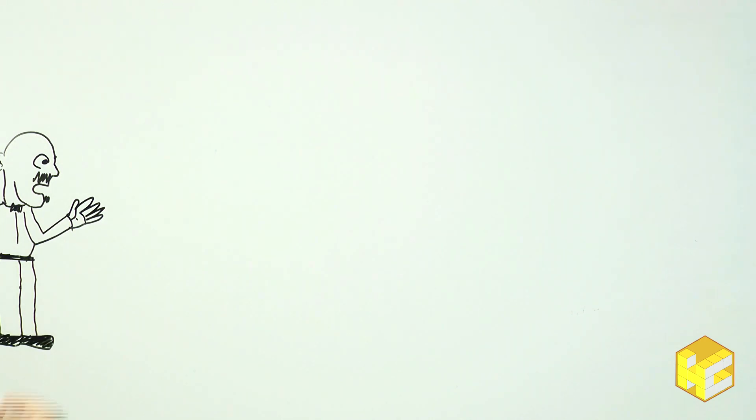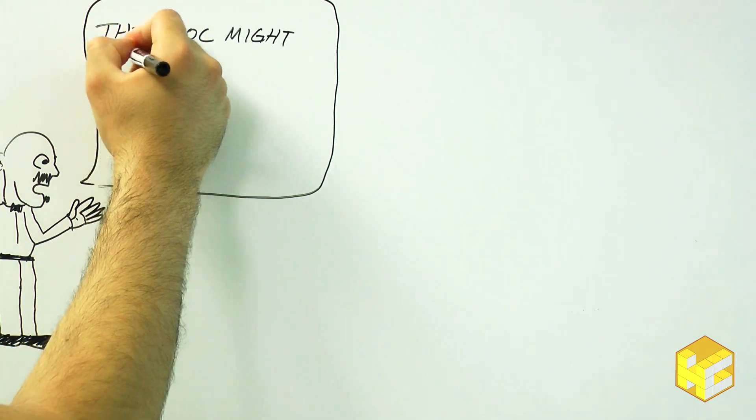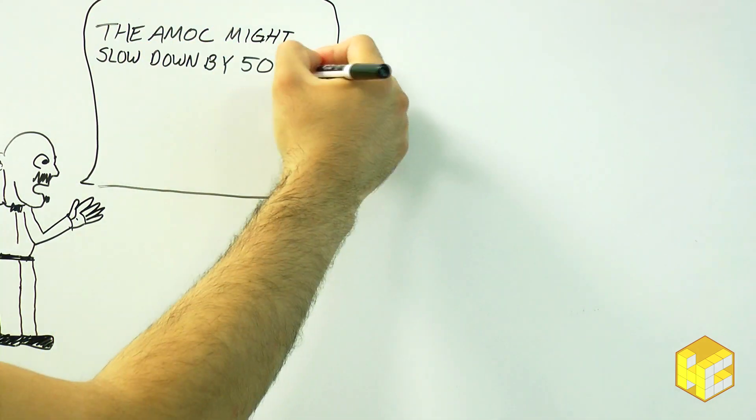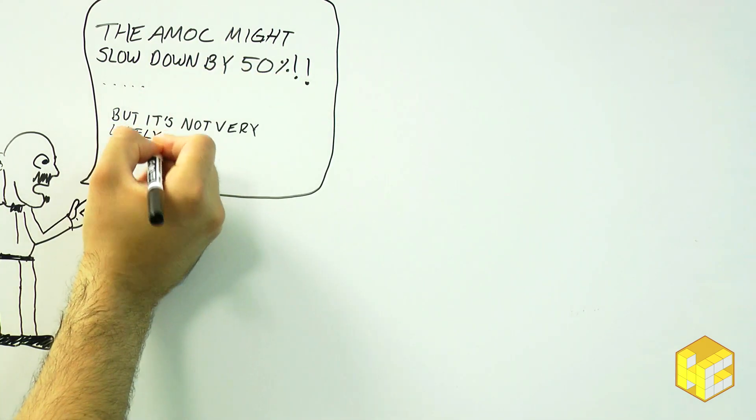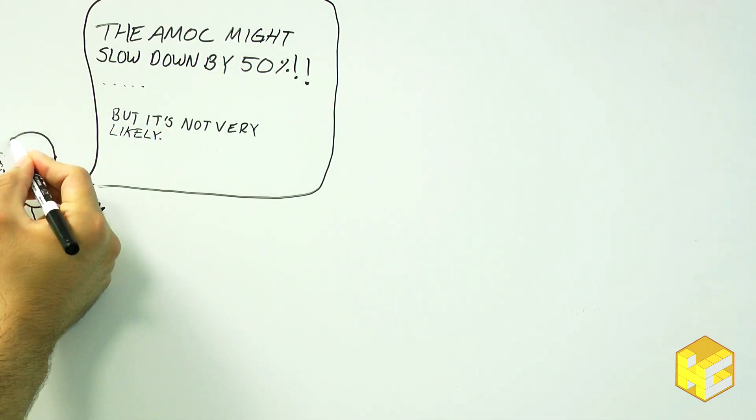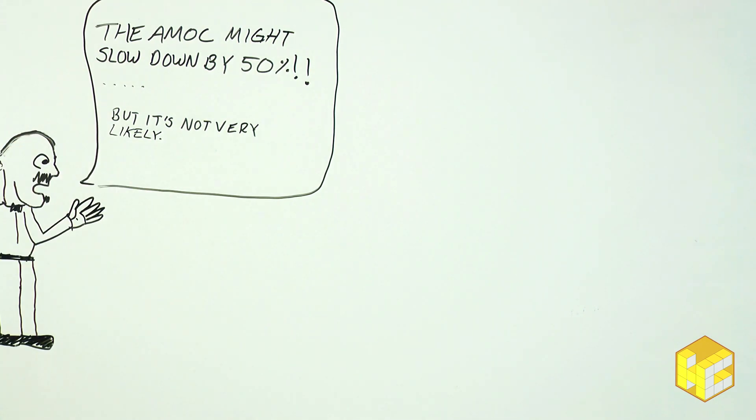The past transition from a warm period to a glacial one witnessed a 50% slowdown of the AMOC, so such a drastic reduction could definitely have some dramatic results. The IPCC doesn't see this as very likely, though. On the other hand, there are scientists claiming that the IPCC is severely underestimating the risks.